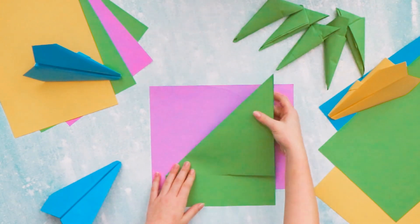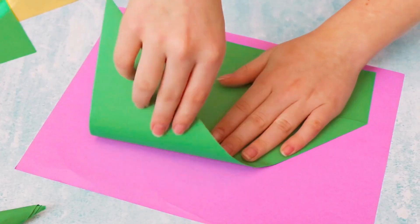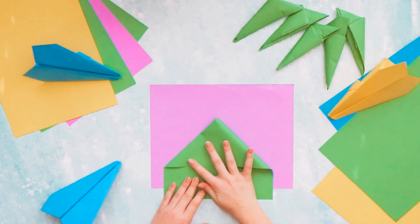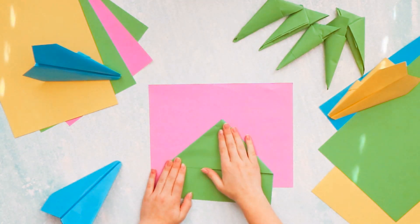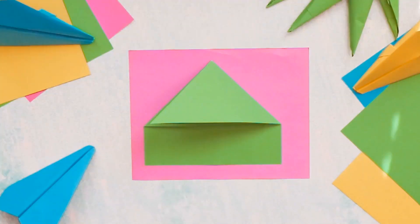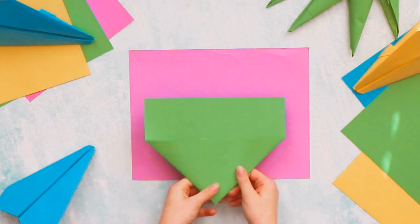Then you want to take the corner of the triangle, the top, and fold it down to the other corner so it makes like a house. Then you flip it upside down.